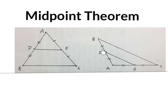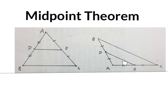If you get the middle of one side of a triangle, the middle of a second side of a triangle, and you connect the two midpoints, that line will be parallel to the third side and that line will be half the length of the third side. You can actually see it just by looking at it, but you need to know the wording.